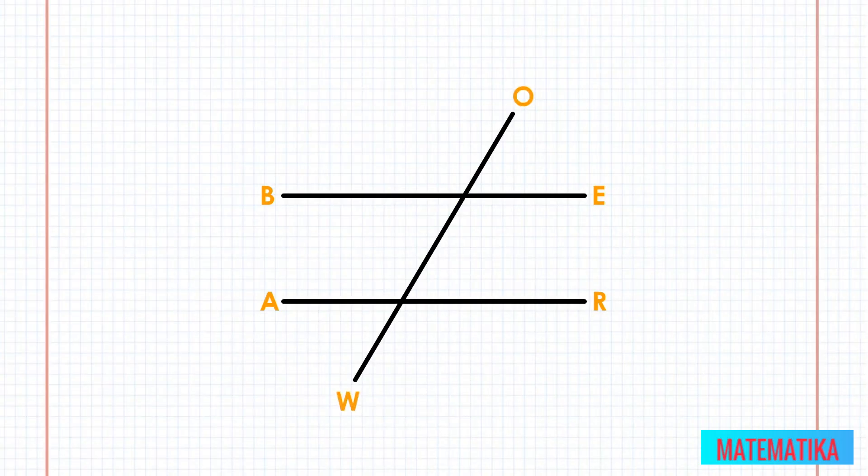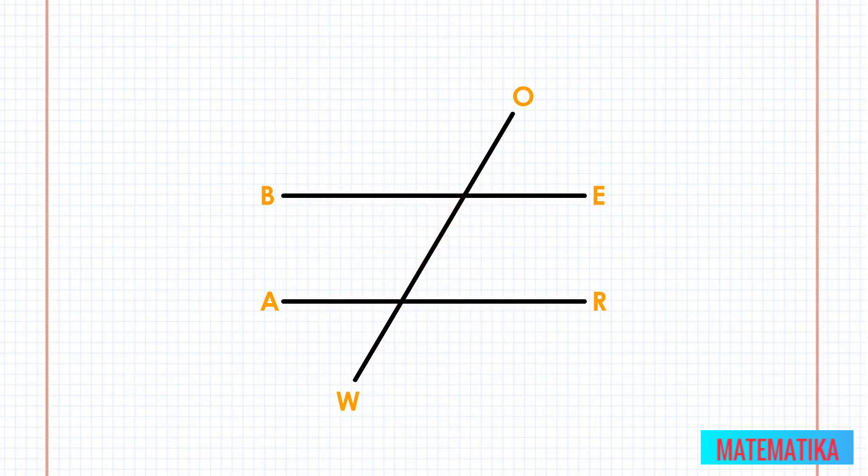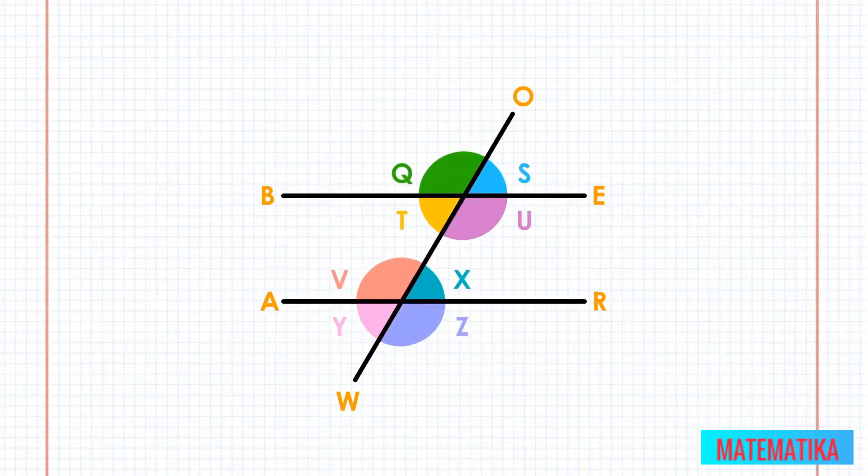You see, it is never a good idea to cross a bear. Our transversal, OW, created eight angles, where it crossed BE and AR.